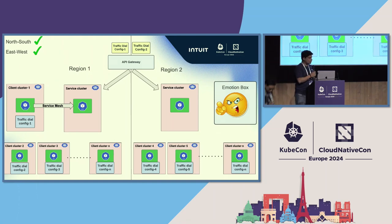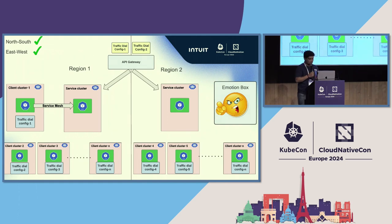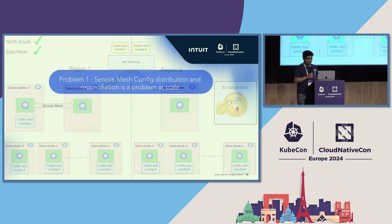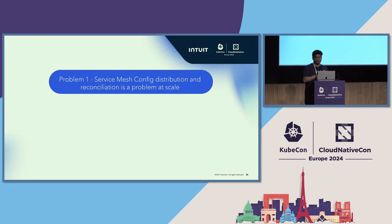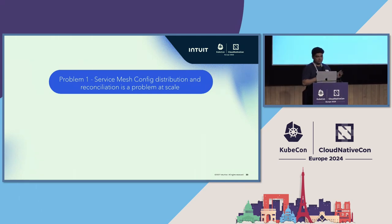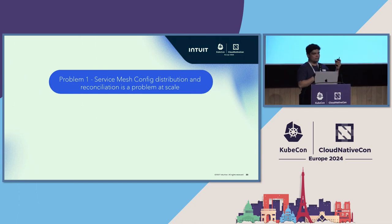Thanks Sumit for setting the context. As Sumit said, we are going to discuss two problems in our service mesh adoption alongside the API Gateway. First: service mesh config distribution and reconciliation at scale. We deploy IstioD in every single cluster, which means client-side configurations really have to be distributed in every single cluster.